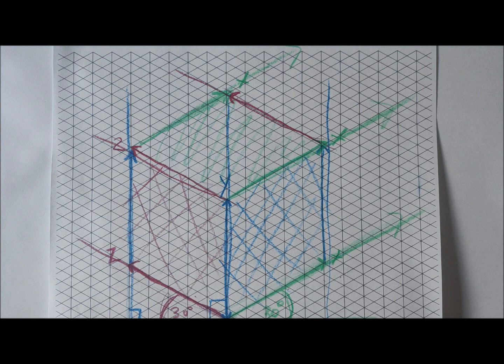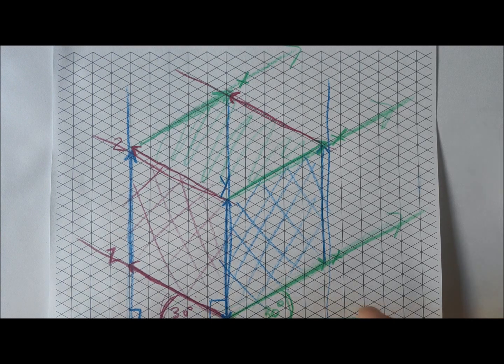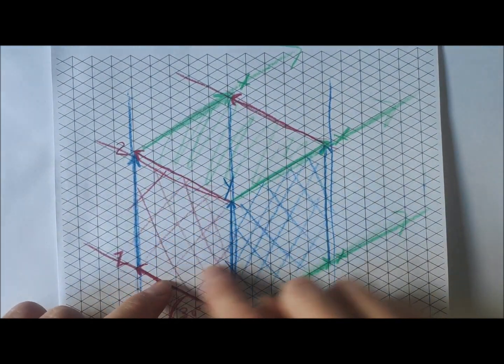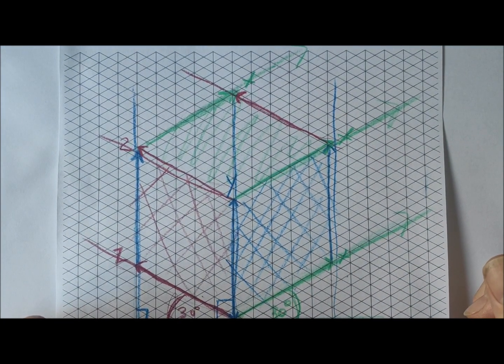But it doesn't distort the object as you might find when you're doing a perspective drawing as you might have done in art for example. So it does have advantages and what we can also show with the different sides is we can show the size of each of these objects accurately in the drawing as well.